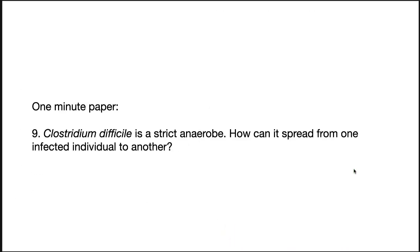One-minute paper: Clostridium difficile is a strict anaerobe. How can it spread from one infected individual to another? The answer is it's a spore-forming bacterium. These endospores are resistant to oxygen, and even though the vegetative cells can't grow in the presence of oxygen, spores can survive in the presence of oxygen and spread from patient to patient that way.